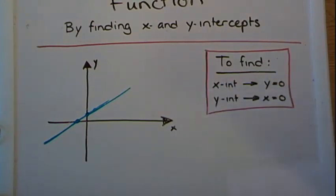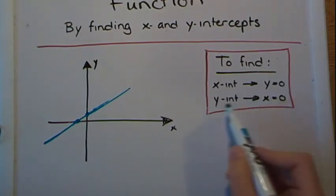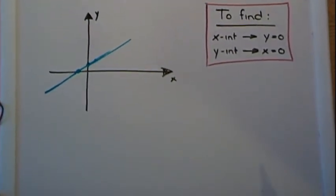And to find the y intercept, we do the opposite. We replace x by zero and solve for y. So let's see how this works.